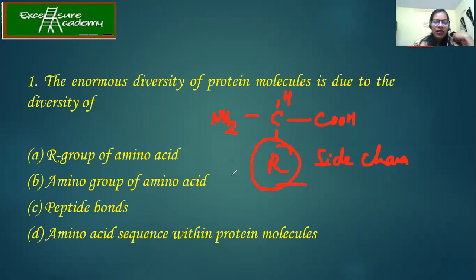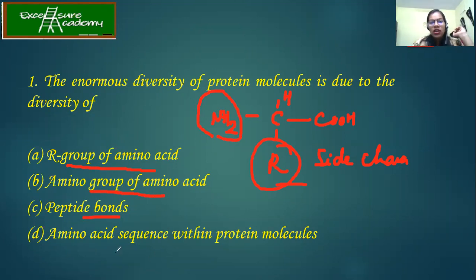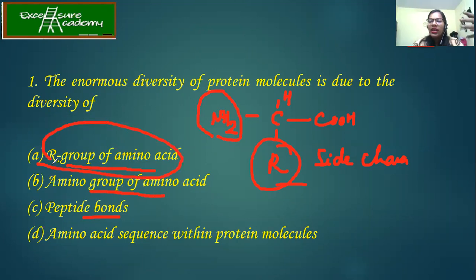Looking at the options: we have the R group of amino acids, the amino group of amino acids, peptide bond, and amino acid sequences within the protein. The amino group remains the same for all amino acids. Peptide bond is common for all proteins. So what we understand is it is the R group of amino acid which brings about more variety and diversity in the proteins. Hence the answer is R group of amino acids.